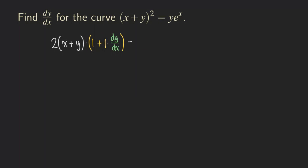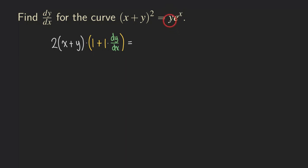Now we are going to differentiate the right-hand side. For the right-hand side, we will be using a product rule and also the chain rule. There is a product here, and also there is a y that we need to differentiate with respect to x, so we need to apply the chain rule as well.